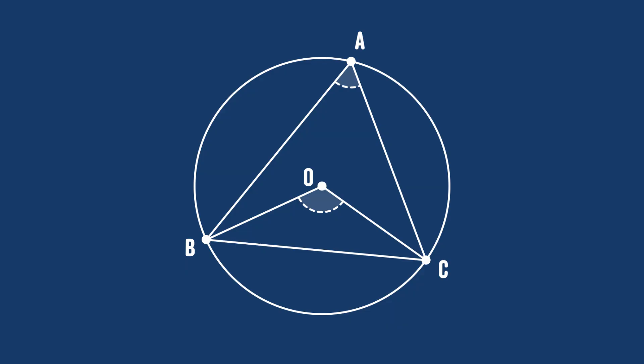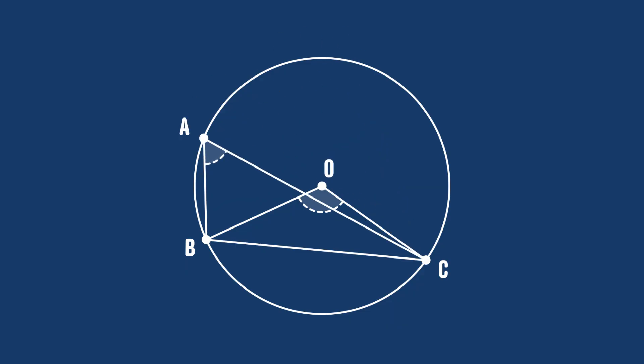And that's where most proofs you will see leave it, and that's why most of them are wrong — because we're not quite finished. We also need to think about what happens if the point A is over here on the other side. The proof we've just given doesn't cover this case, and in maths a proof isn't a proof until you've shown it works for all cases. Luckily it turns out we can prove this in a very similar way, but we must be very careful.